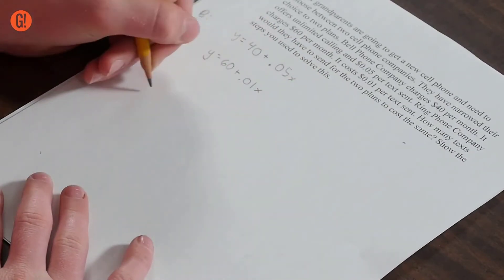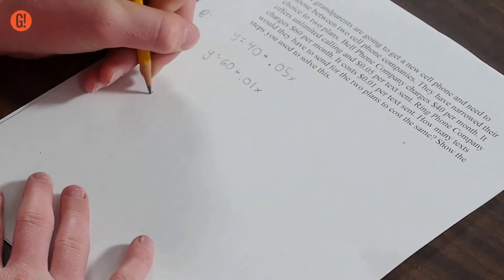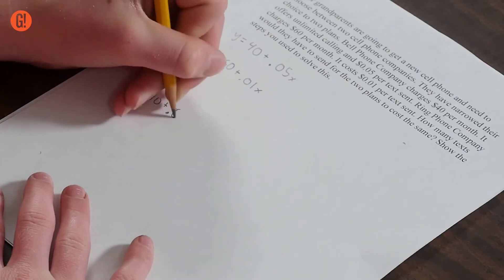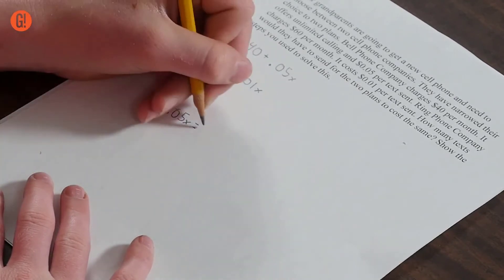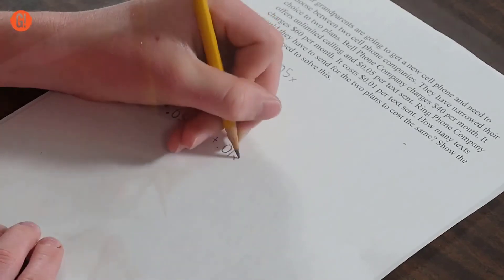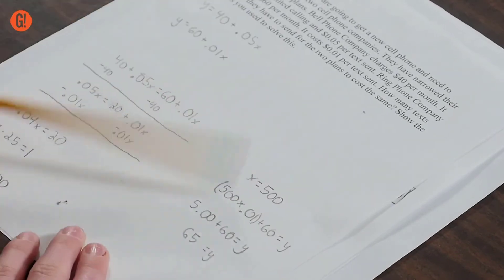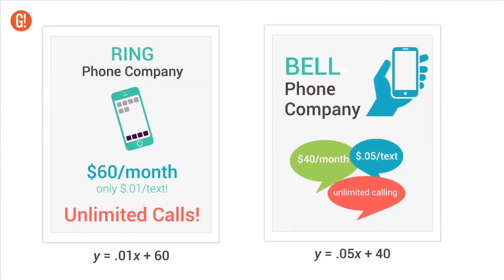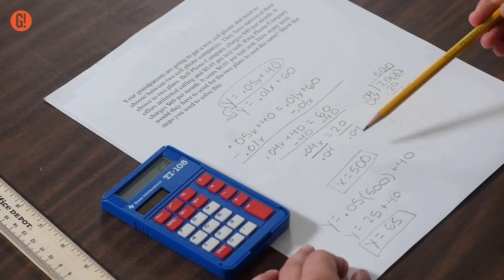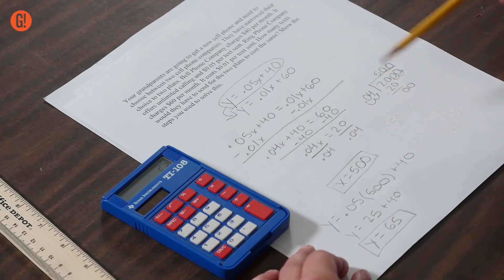Next, kids use their algebra skills to solve their system of equations, as Colin does here. And since they're both equal to y, I can set them equal to each other. Y equals 65. And of course, kids must be able to explain what the solution means in terms of the original problem. They would have to send 500 texts for their plans to cost the same at $65.